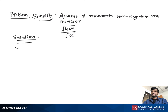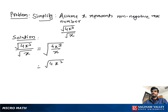Simplify square root of 4x cubed divided by square root of x. Since both the numerator and denominator are under square roots, we can write this as square root of (4x cubed divided by x). Simplifying under the radical, 4x cubed divided by x gives us 4x squared.